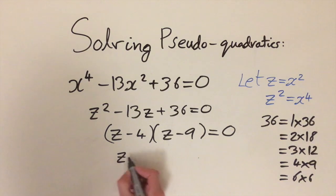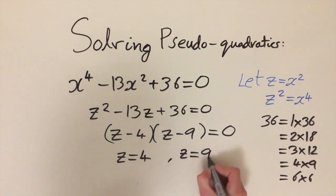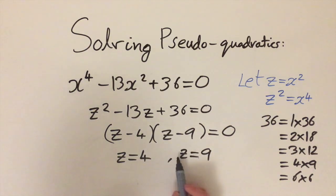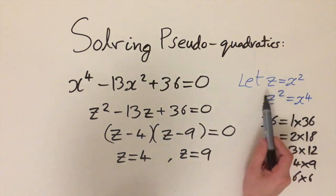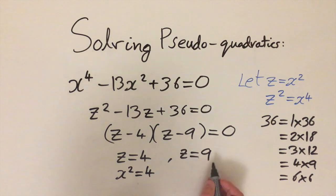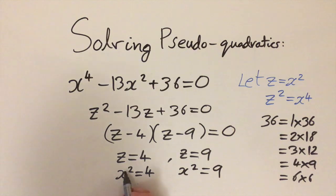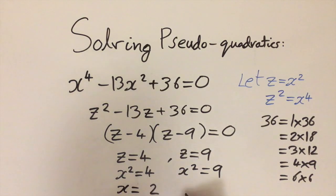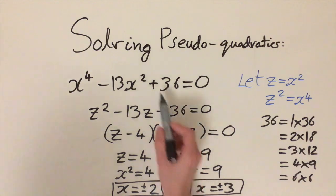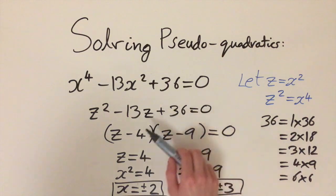Setting each bracket to zero gives z equals 4 and z equals 9. Going back to our substitution, z = 4 means x squared equals 4, and z = 9 means x squared equals 9. Taking square roots gives x equals plus or minus 2 and x equals plus or minus 3, giving four solutions in total. So we originally had a quartic equation and got four solutions, but found them simply by solving a regular quadratic equation.